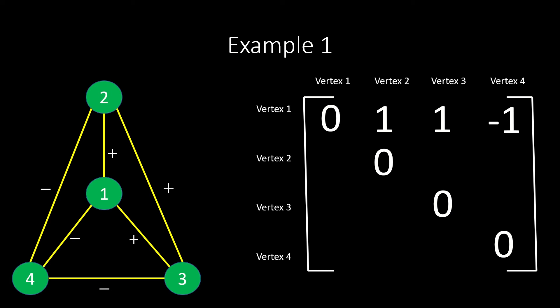Vertex 2 is adjacent to vertices 1 and 3 with positive edges, and adjacent to vertex 4 with a negative edge, so entries 2, 1 and 2, 3 are positive 1, and entry 2, 4 is negative 1.